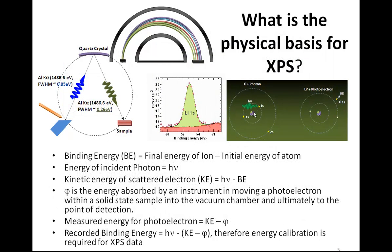We classify elements and chemical state in terms of binding energy. This means the emitted electron has a kinetic energy which we want to relate back to a physical property of the atom. The binding energy of, say, a lithium 1s electron is the difference between the final energy of the ion and the initial energy of the atom. The kinetic energy is the difference between the photon energy and the binding energy, so one might expect to directly relate kinetic energy to binding energy.